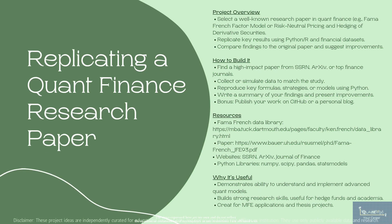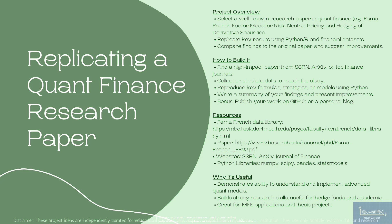For those who really want to dig deeper into academic finance and prove their analytical chops, I recommend replicating a quant finance research paper. Select a well-known research paper — say on the Fama-French factor model or risk-neutral pricing and hedging of derivatives — collect the same data the paper uses or simulate your own dataset, reproduce the formulas and models, and see if you can match the original results. This sharpens your research and programming skills and helps you understand cutting-edge financial theories, proving to potential employers that you can not only read academic papers but also implement them.